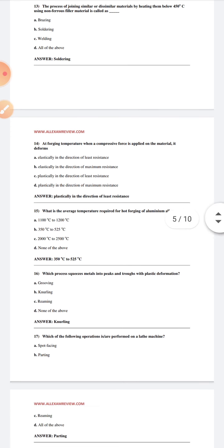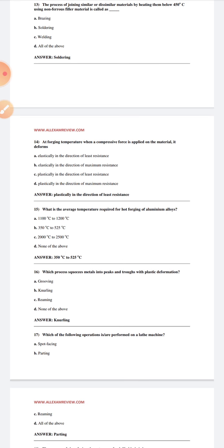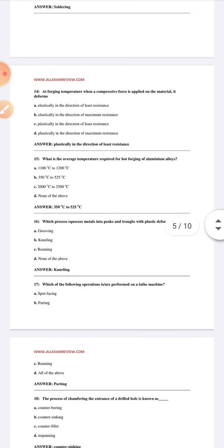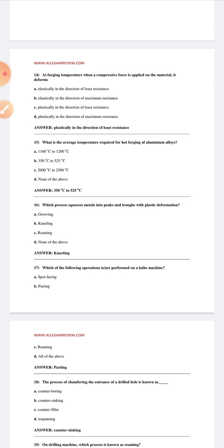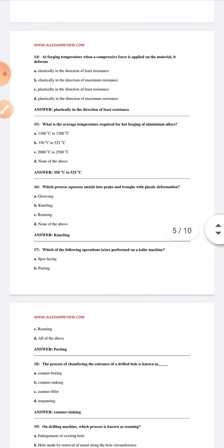What is the average temperature required for hot forging of aluminum alloys? 350 degrees Celsius to 525 degrees Celsius. Which process secures metals into shape and toughness with plastic deformation?